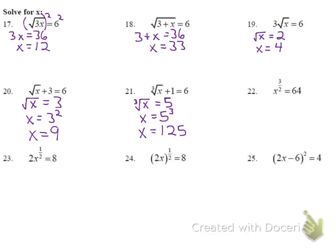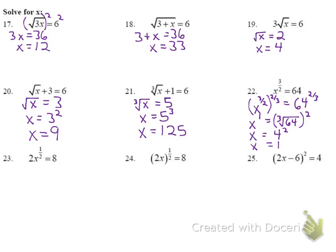For number 22: I have a rational exponent and want to eliminate it. I raise both sides to the reciprocal: x to the 3/2, to the 2/3 equals 64 to the 2/3. The exponents multiply to give x to the 1st power. The right side becomes the cube root of 64 squared — the cube root of 64 is 4, so x equals 4 squared, which is x equals 16.